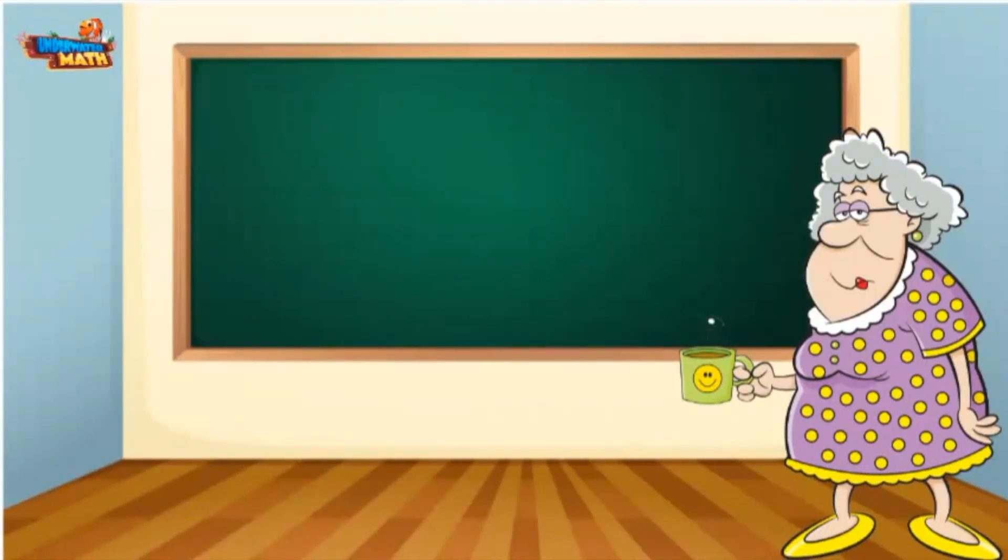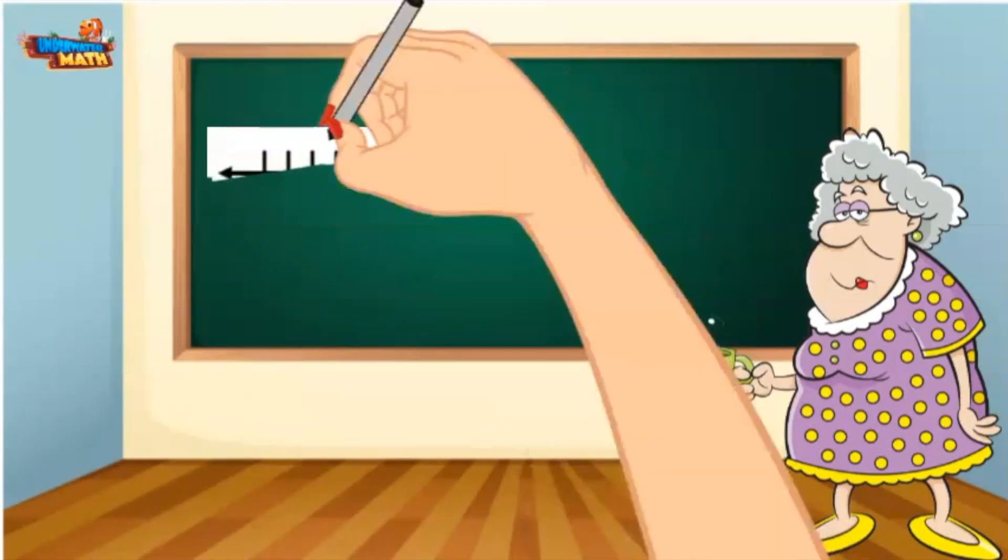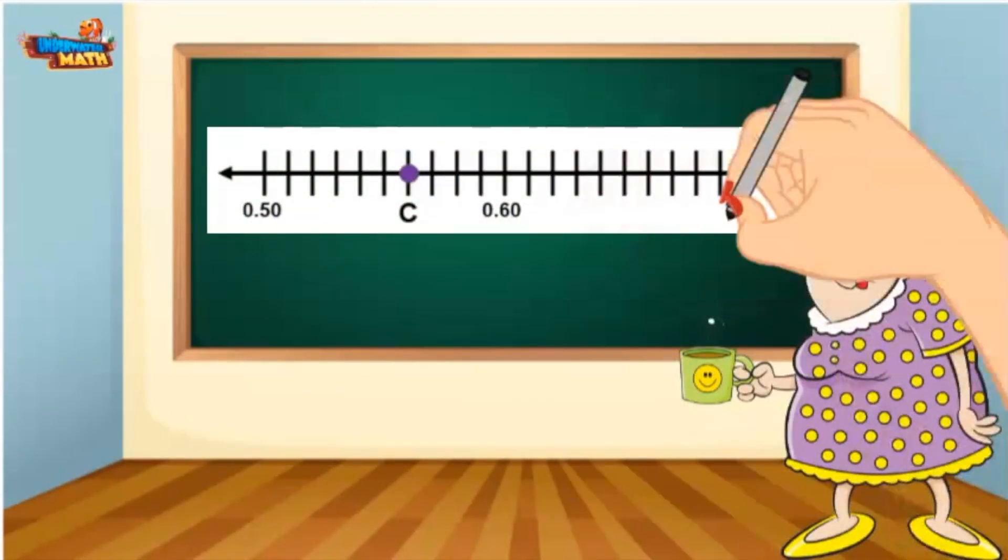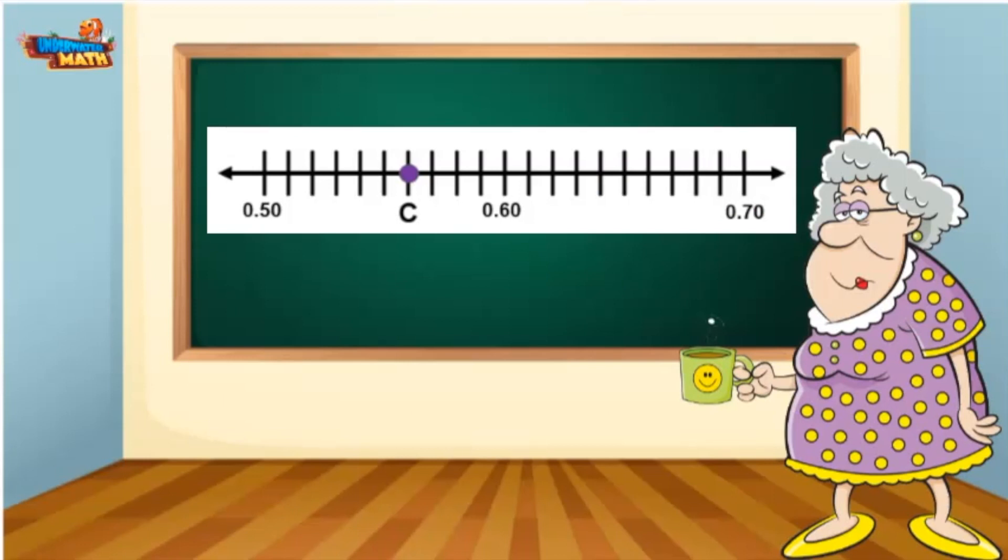Here's a number line. We need to determine the decimal at point C on the number line. C for Crabtree, you know. Point C is between 50 hundredths and 60 hundredths. On this number line, I can count each tick mark by hundredths to determine what decimal is at point C.